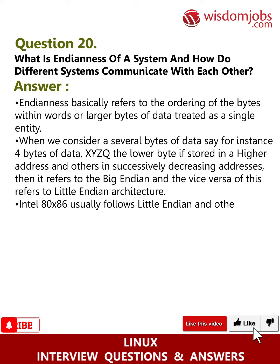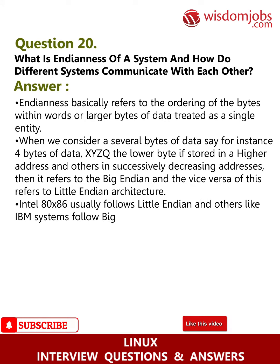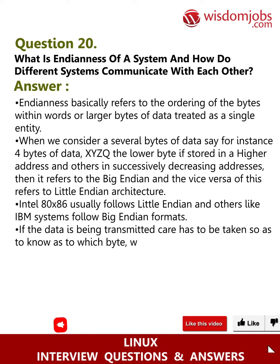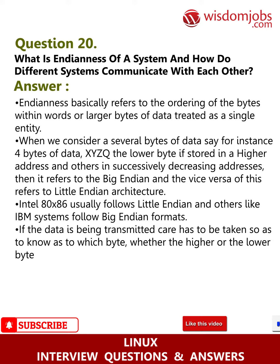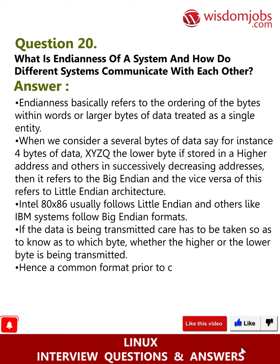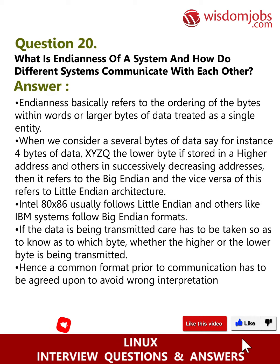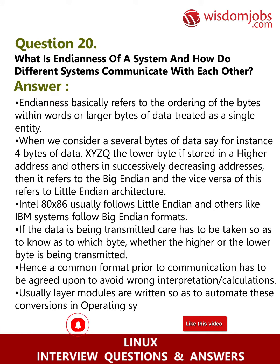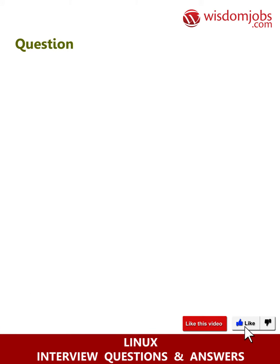The reverse of big-endian is little-endian architecture. Intel x86 systems typically follow little-endian format while IBM systems follow big-endian format. When data is transmitted, care must be taken to know which byte — higher or lower — is being transmitted. A common format must be agreed upon prior to communication to avoid wrong interpretation. Layer modules are written to automate these conversions in operating systems.